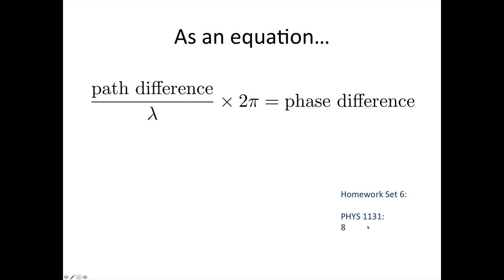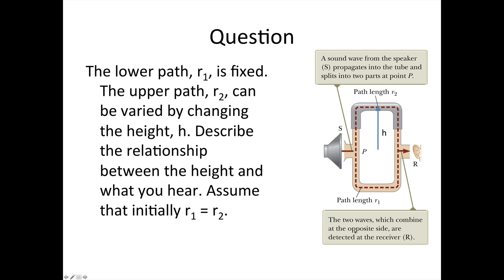If you're in course 1131, you can practice this with homework set 6, question 8. For the practice question: the lower path R1 is fixed, and the upper path R2 can be varied by changing the height H. Describe the relationship between the height and what you hear, assuming initially that R1 = R2. Hint: what you hear is related to the amplitude of the wave. If the amplitude is high, you'll hear a loud noise; if the amplitude is low, you'll hear a much quieter noise.